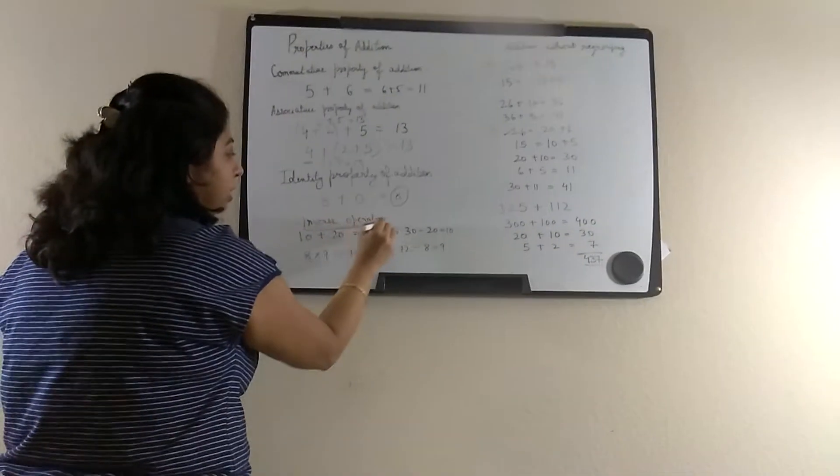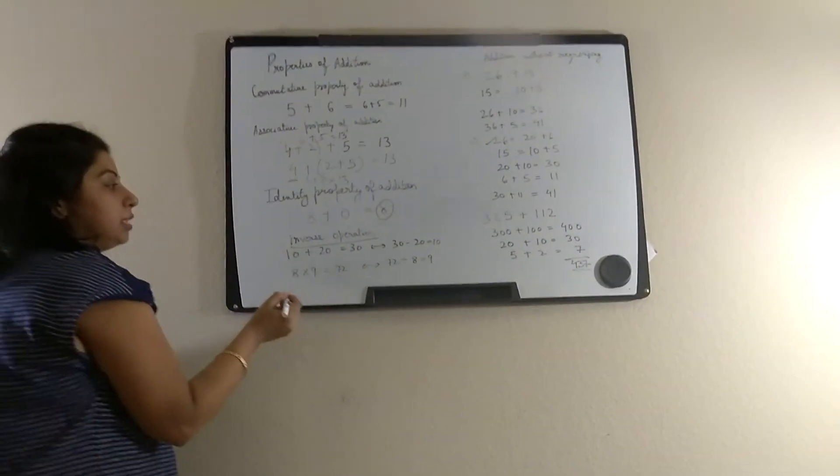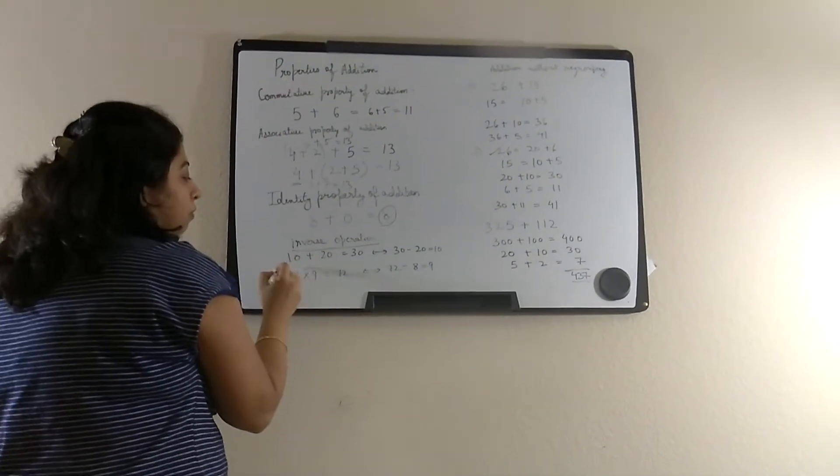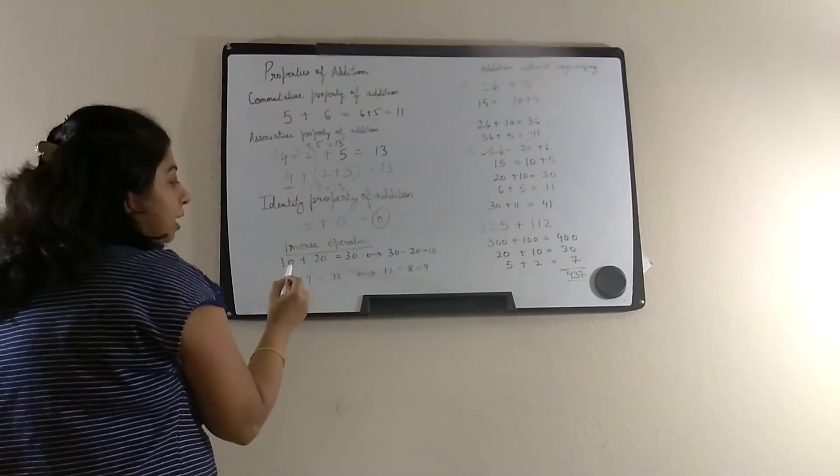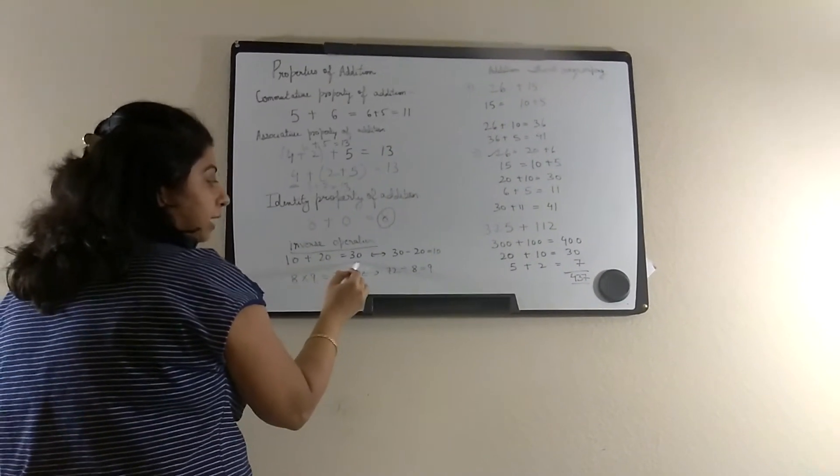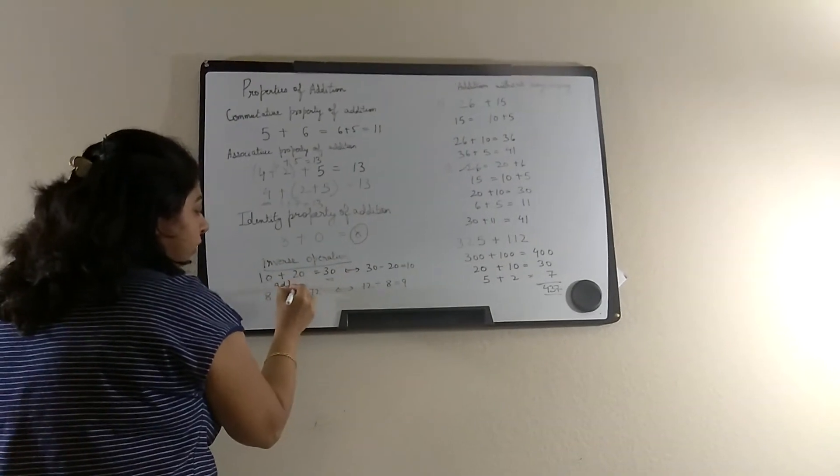What is called inverse operation? Inverse is the opposite of one operation. Like 10 plus 20 is 30. So we are doing addition over here.